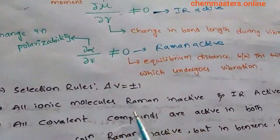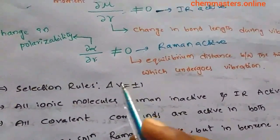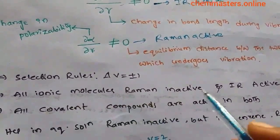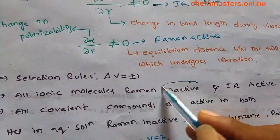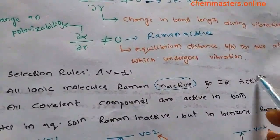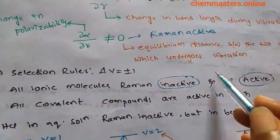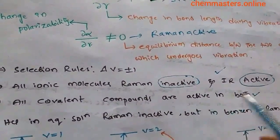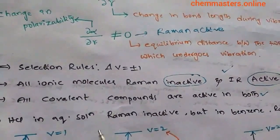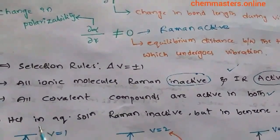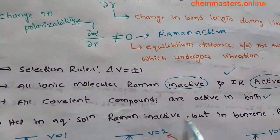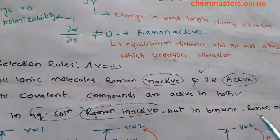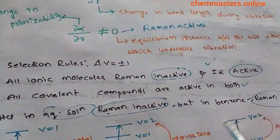Some important points: all ionic molecules are Raman inactive and IR active. All covalent compounds are active in both IR and Raman. An interesting example — HCl in aqueous solution is Raman inactive, but in benzene, HCl is Raman active.